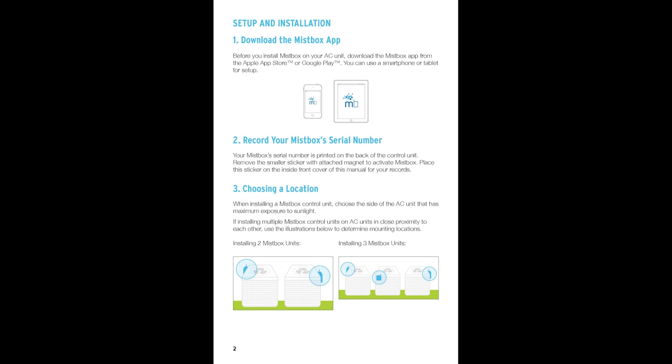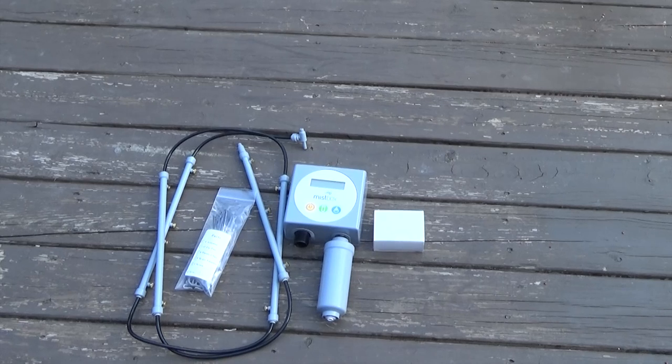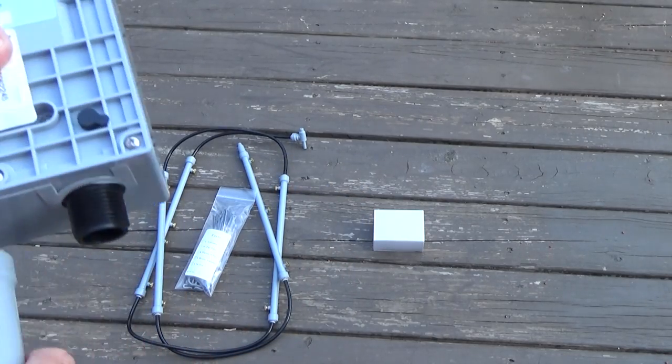Let's pull up the manual. The first step is to download the app. I'm not going to tell you how to do that because hopefully you can figure that out. You need to record your serial number, you really don't need to. Then you have to choose a location and this is really important if you have two units because you don't want this one to go off when your second or third unit comes on. You see here that you have to attach the Mistbox to your AC unit. The most typical approach is with screws. It's got three holes at the top so you can pretty much find an area to attach it to.